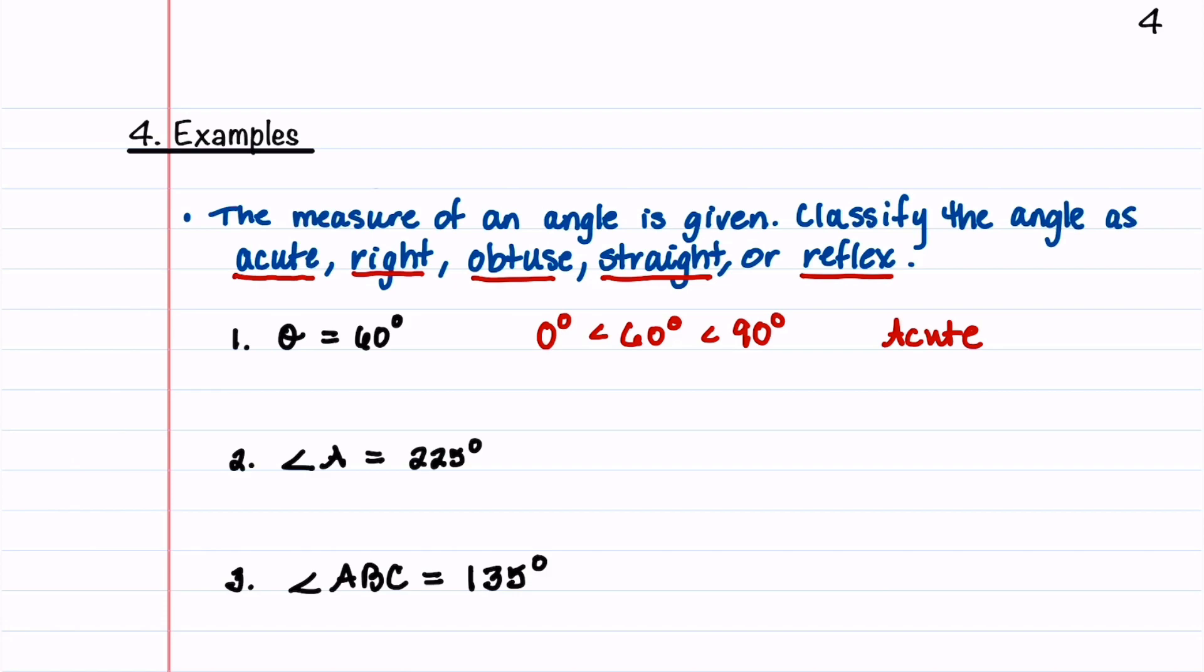The second one, our angle is 225 degrees. So we say, okay, 225 degrees is between 180 degrees and 360 degrees. So this one is a reflex angle. I always think that's the hardest one.